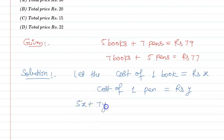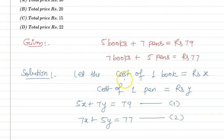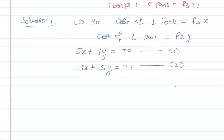According to the question, the cost of five books that is 5x plus seven pens that is 7y is equal to 79 — let's say equation 1. And seven books plus five pens equal to 77 — let's say equation 2. Cost of one book is rupees x, cost of one pen is rupees y.